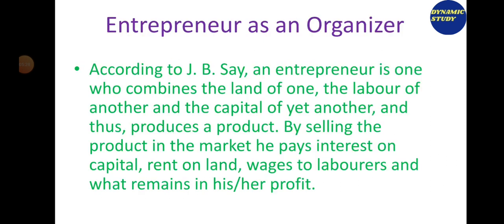Next is entrepreneur as an organizer. According to J.B. Say, an entrepreneur is one who combines the land of one, the labor of another, and the capital of yet another, and thus produces a product. By selling the product in the market, he pays interest on capital, rent on land, and wages to laborers — and what remains is his or her profit.